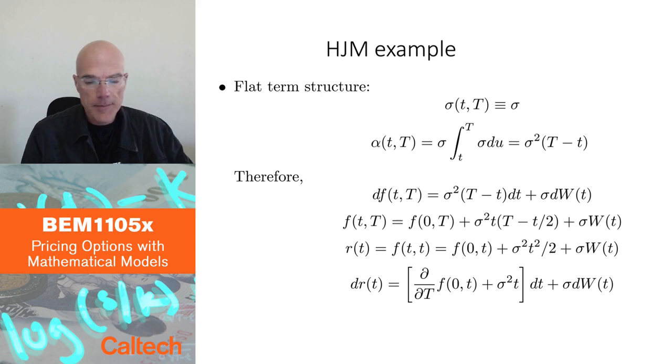What is the simplest possible example? The simplest possible example is in which the volatility of the forward rates is simply constant. Forward rates for all times and all maturities have constant volatility sigma. Let's see what happens in that case.